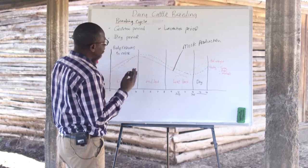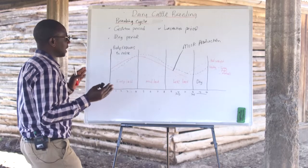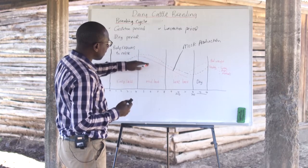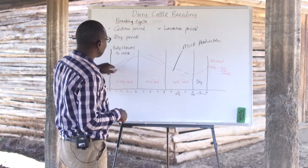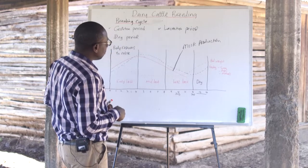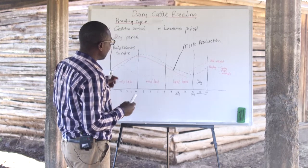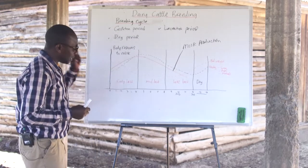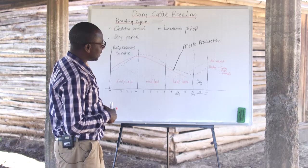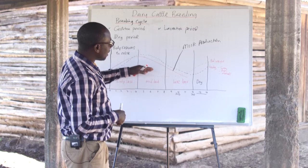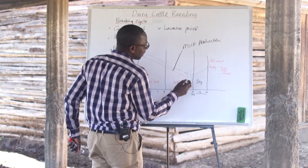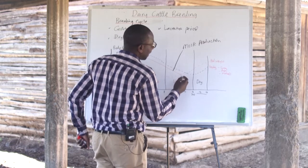Towards mid lactation, the feed ratio of energy, protein, and minerals should be given adequately to the animal, because this is the time the cow is expected to produce more milk and also maintain body weight. Towards late lactation, if the cow had been served after two months, the cow will be pregnant and the calf will be growing. During this lactation stage, the cow should receive enough minerals and proteins as opposed to energy feeds.